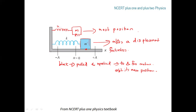The block oscillates between −A and +A, where the center is the mean position. The maximum displacement executed by the block is the amplitude A.